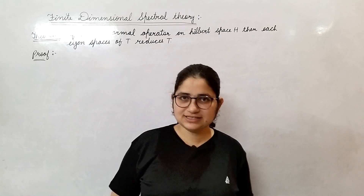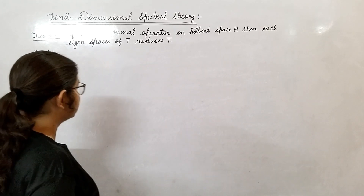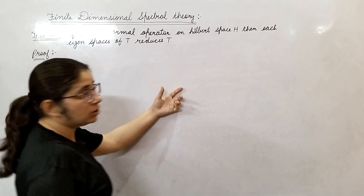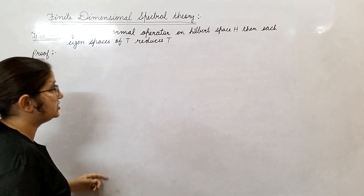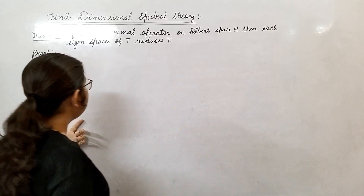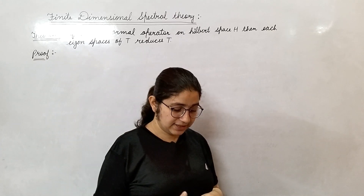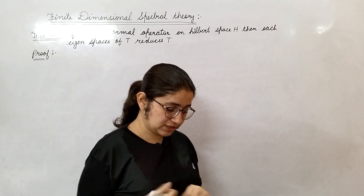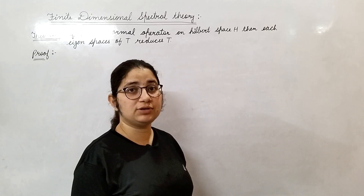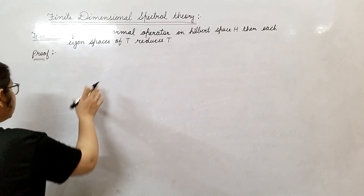Welcome back students. In today's class we are going to show this result: if T is a normal operator on Hilbert space H, then each eigenspace of T reduces T. Let M be an eigenspace of T, and what we need to show is that M reduces T.